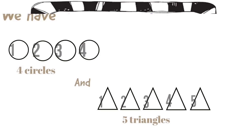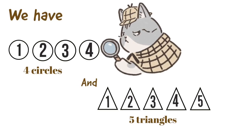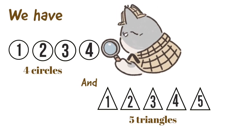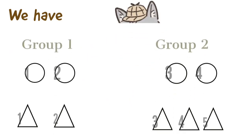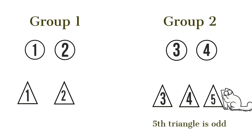For example, we have four circles and five triangles. We will try to divide them into two equal groups.